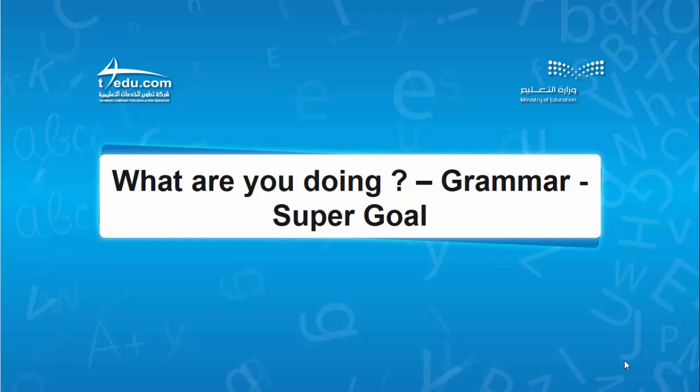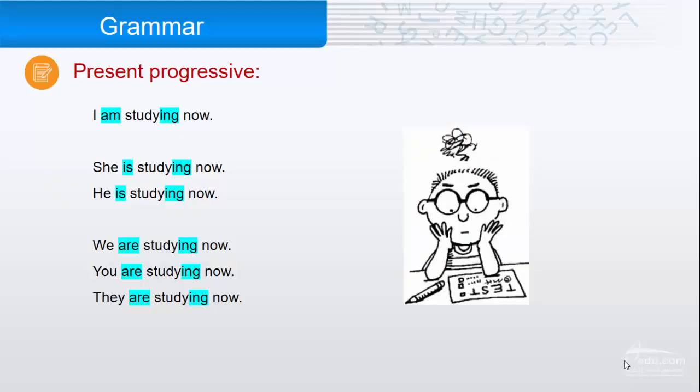Assalamu alaikum. What are you doing? Grammar Super Goal: the present progressive. We use the present progressive to describe something that is happening now. For example, 'study.' We say I am studying now, she is studying now, he is studying now, we are studying now, you are studying now...